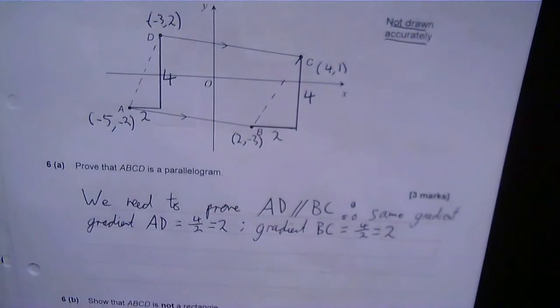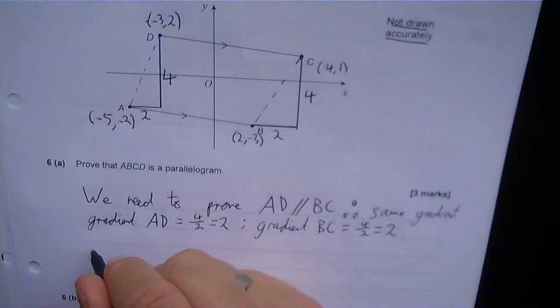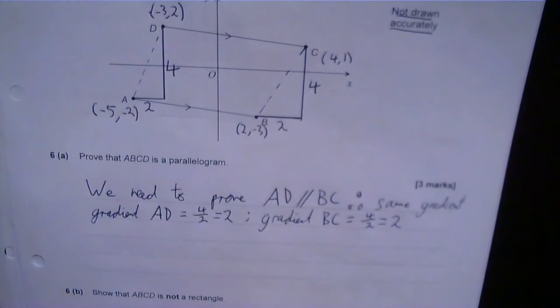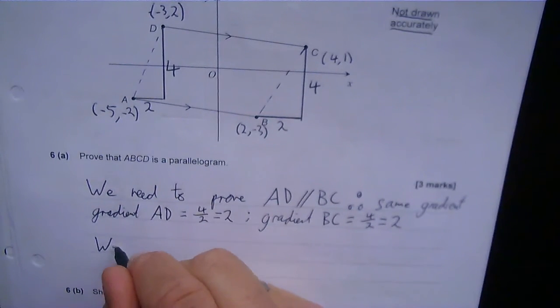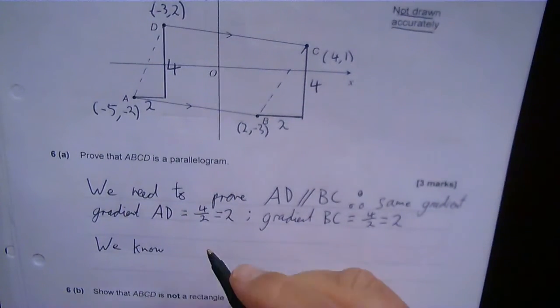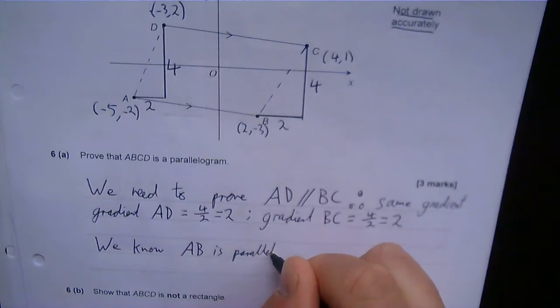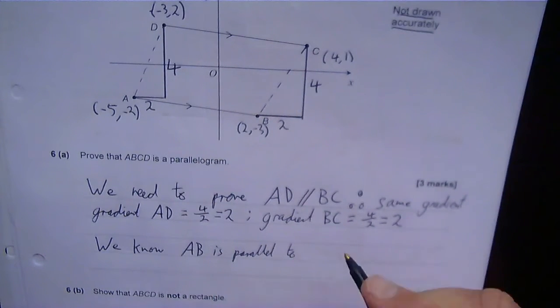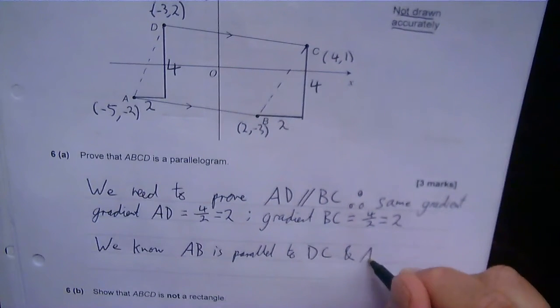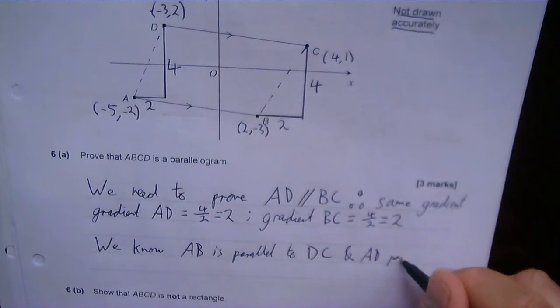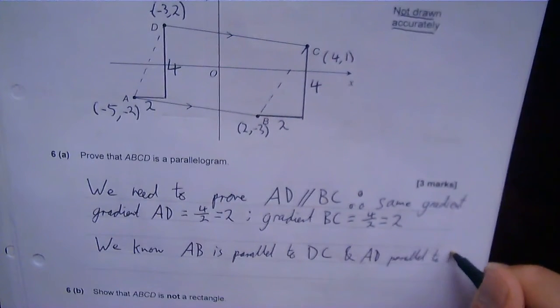I'm going to make just a statement to clarify that. So we know that AB is parallel to DC, and that AD is parallel to BC.